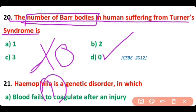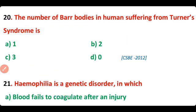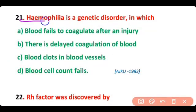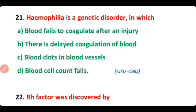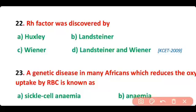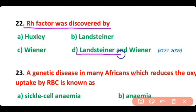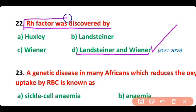Question number 21. Hemophilia is a genetic disorder in which there is delayed coagulation of blood. So correct answer is option B. Question number 22. Rh factor was discovered by Landsteiner and Wiener. So correct answer is option D. Landsteiner and Wiener discovered the Rh factor in 1940.